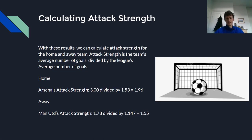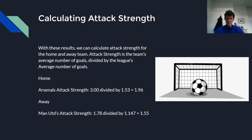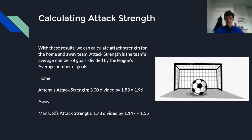So how do we calculate attack strength? With the data on the previous table, we can calculate attack strength for the home and the away team. Attack strength is the team's average number of goals divided by the league's average number of goals. In our example, Arsenal's attack strength is 3.0 divided by 1.53, which gives us 1.96. And to calculate Manchester United's attack strength, we take 1.78 and divide it by 1.147, which gives us 1.55.